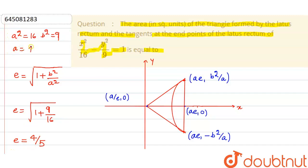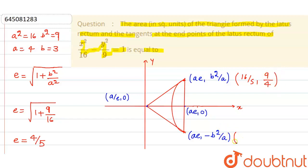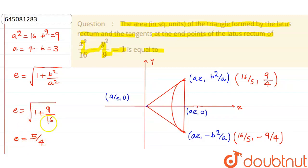We made a mistake — e is equal to 5/4, not 4/5. Since the denominator is 16, we get √(25/16) = 5/4. So e = 5/4, and from a² = 16 we get a = 4, and from b² = 9 we get b = 3.